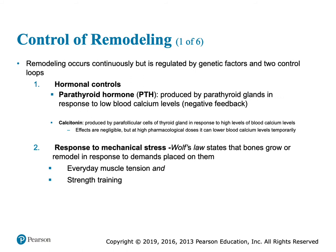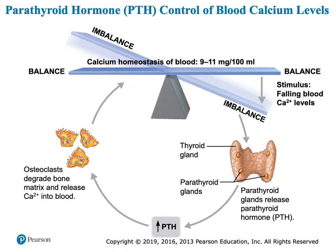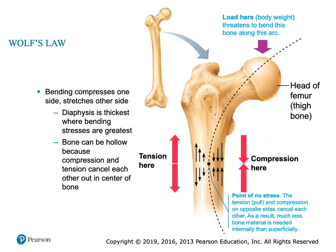The reason we should do strength training when young is so that when we're old, we don't have as fragile bones. This slide shows how parathyroid hormone works to keep us in balance — we must have calcium. If the body recognizes blood calcium is too low, that tells parathyroid hormone to be released, telling osteoclasts to start shaving on bone. Wolf's Law: stressors make that bone thicker to resist routine stresses.